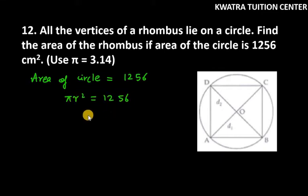So, πr² equals 1,256. Now, r² will be 1,256 over 3.14. Put the value of π here. If I remove the decimal point from here and multiply by 100, then our calculation will be simplified.